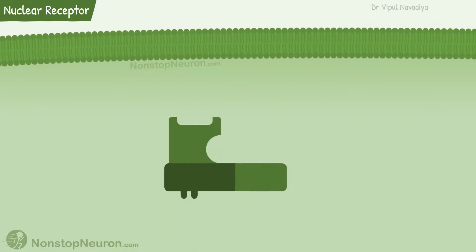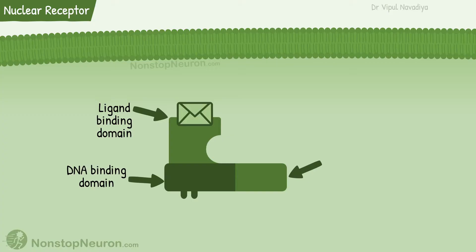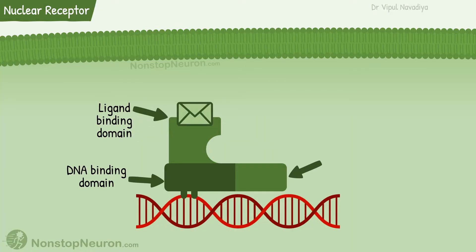Now let's see the structure of the nuclear receptors. They have three main domains. A ligand binding domain where the ligand binds. A DNA binding domain that binds with the DNA. And a transactivation domain that brings about changes in the DNA conformation to initiate transcription.